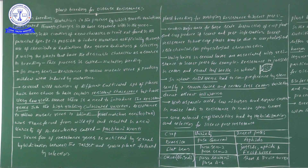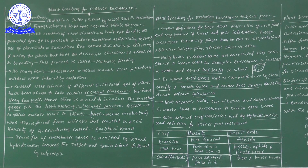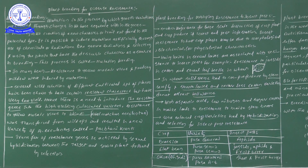The best example is moong bean — resistance to yellow mosaic virus and powdery mildew. This particular moong bean has the capability to resist yellow mosaic virus as well as powdery mildew. We have derived this variety by using mutations. By bringing mutations, we have created a moong bean that shows resistance to yellow mosaic virus and powdery mildew.